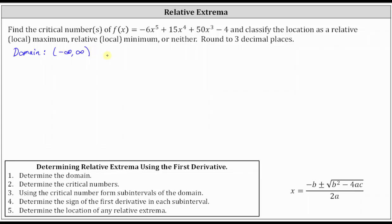Now we're going to determine the critical numbers, which is where the first derivative is equal to zero or undefined. So let's find the first derivative: f prime of x is equal to negative 30x to the fourth, plus 60x to the third, plus 150x squared. Notice there are no values of x where this degree four polynomial will be undefined, and therefore we determine the critical numbers by setting the derivative equal to zero and solving.